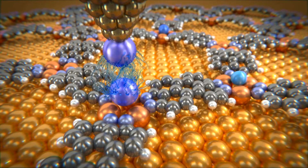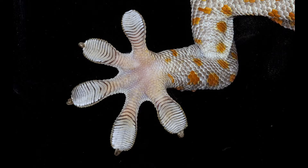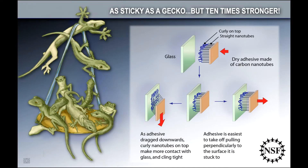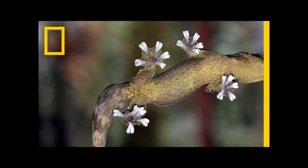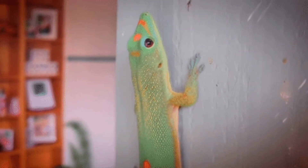Van der Waal forces can be found in different places around the world, but specifically in nature we can see an example with the gecko. The non-polar molecules — in this instance the hands and the wall — form weak bonds that hold them together long enough for the gecko to climb. However, these bonds are weak enough for the gecko to break them apart as it moves forward.